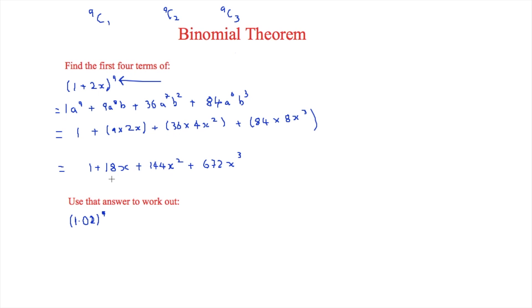But then the next question is we're using this answer here to work out 1.02 to the power of 9. Now initially you may think well how would you do that? But we know that this is going to be equal to 1 plus 2x to the power of 9. Now therefore we know that x is going to be equal to 0.01. Now we know this because that's 1.02. This is 1 plus 2x so therefore 2x is equal to 0.02. Therefore x on its own is equal to 0.01.